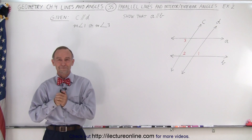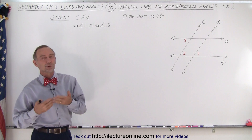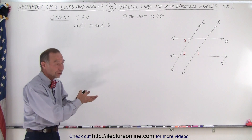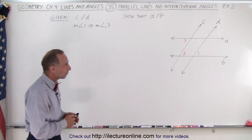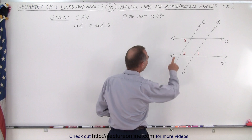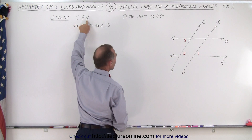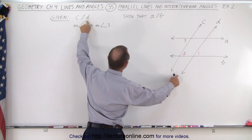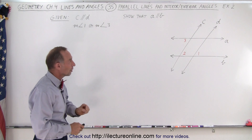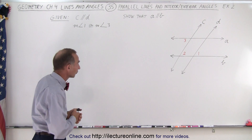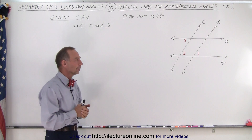Welcome to ElectronLine. Here's a second example trying to determine if two lines are parallel based upon what we know about interior and exterior angles. We're given two pairs of lines: C and D, and A and B. We're told that C is parallel to D, so those two lines are parallel to one another. We're also told that the measure of angle one is congruent to the measure of angle three. Now we're supposed to show that lines A and B are parallel to one another.